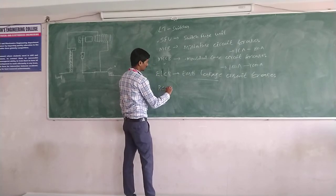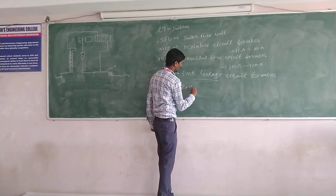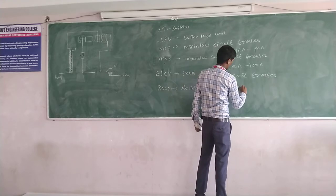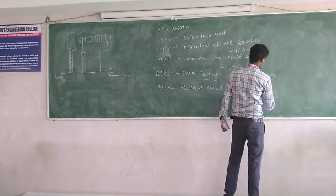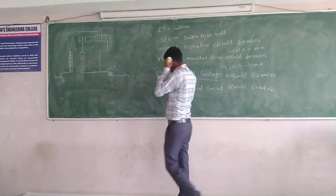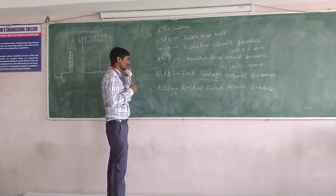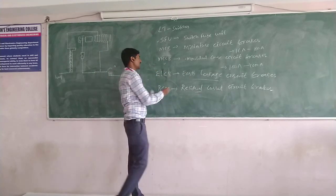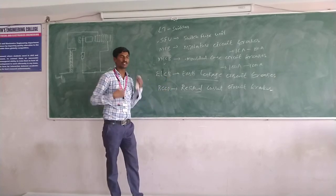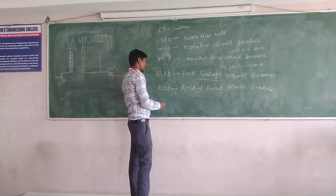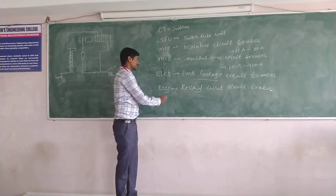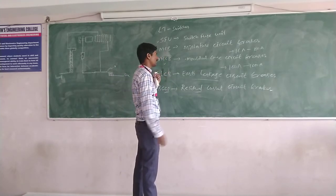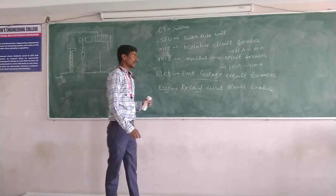Next is RCCB — Residual Current Circuit Breaker. The ELCB consists of two types: one is the voltage-operated type and another is the current-operated type. We use RCCB, which is the current-operated type. This RCCB also comes under ELCB only. RCCB is much more commonly used compared to the voltage-operated ELCB.